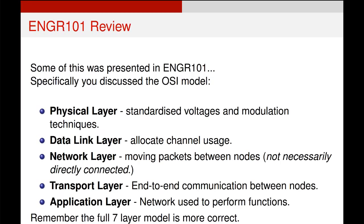In Engineering 101, we talked about the multi-layered OSI model of any kind of connected network of computers. In general, the OSI model has seven layers. We're only going to worry about five of them, which go from the physical layer — like a physical copper or fiber optic wire or Wi-Fi radio signals connecting things — right the way up to the application layer.